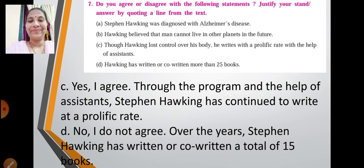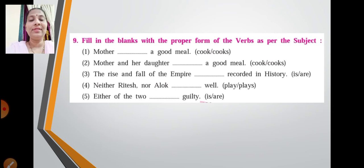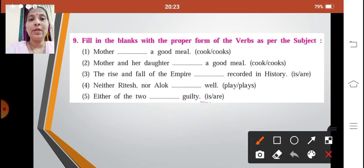Okay children, next we have is fill in the blanks with the proper form of the verbs as per the subject. So over here we have to do the subject-verb agreement. First sentence: mother dash a good meal. So the subject mother is a singular one, so our verb will also be singular. So it will be mother cooks a good meal. Next: mother and her daughter dash a good meal. So mother and her daughter cook a good meal.